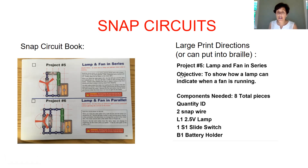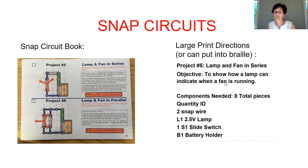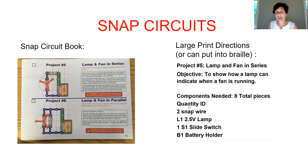This is just the beginning of the directions where the project is a lamp and fan, and the objective is to show how a lamp can indicate when a fan is running. It tells you the pieces needed — there's a total of eight pieces to do this project.